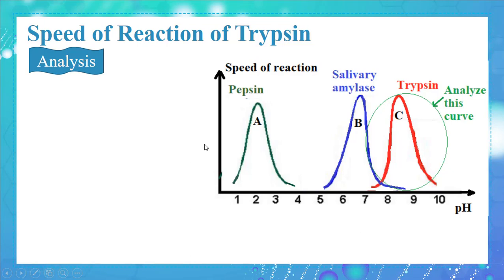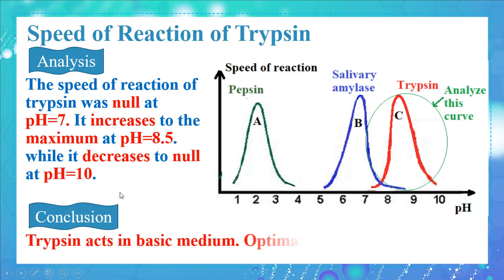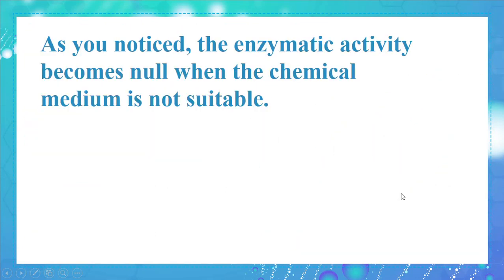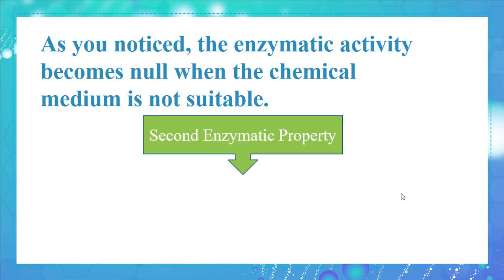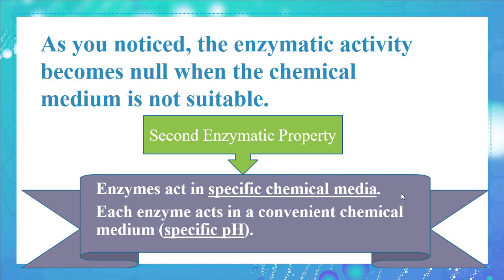The speed of reaction of trypsin was null at pH equal to 7, increases to the maximum at pH equal to 8.5, and decreases to null at pH equal to 10. We conclude that trypsin acts in a basic medium; the optimal pH of trypsin is 8.5. As you noticed, enzymatic activity becomes null when the chemical medium is not suitable. So the second enzymatic property is: enzymes act in specific chemical media — each enzyme acts in a specific pH.